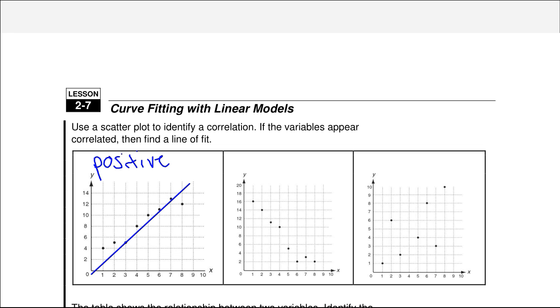The second one, we can draw a line through, and we see that it's going down. It has a negative slope. All of the points are close to the line. This one has a negative correlation.